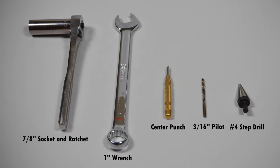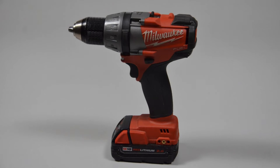Required tools are 7/8 inch deep well socket and ratchet, a 1 inch open-ended or adjustable wrench, an automatic center punch, a 3/16 pilot drill bit, a number 4 step drill bit, and an electric drill.